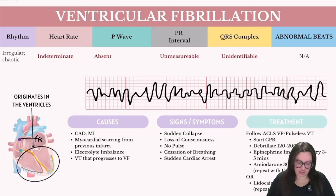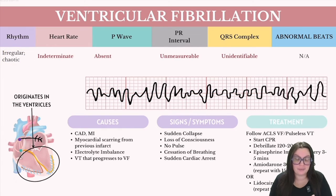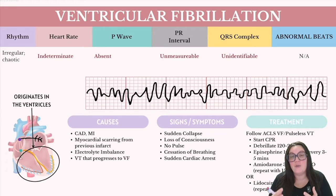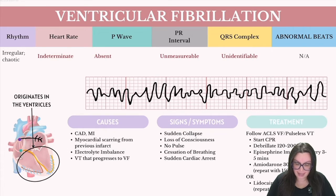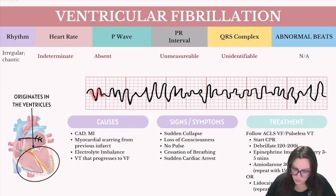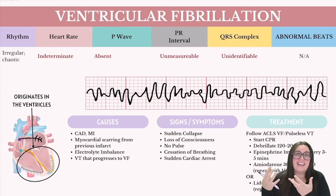When it comes to rhythm identification, the rhythm is going to be irregular and chaotic — very hard to march out. The heart rate is going to be indeterminate because there are no identifiable peaks, QRS complexes, or atrial rhythms. Because the atria have given out, just like most ventricular rhythms, we have absent P waves and no measurable PR interval. The QRS complex will be unidentifiable due to this chaotic rhythm, and there are no ectopic or extra beats.